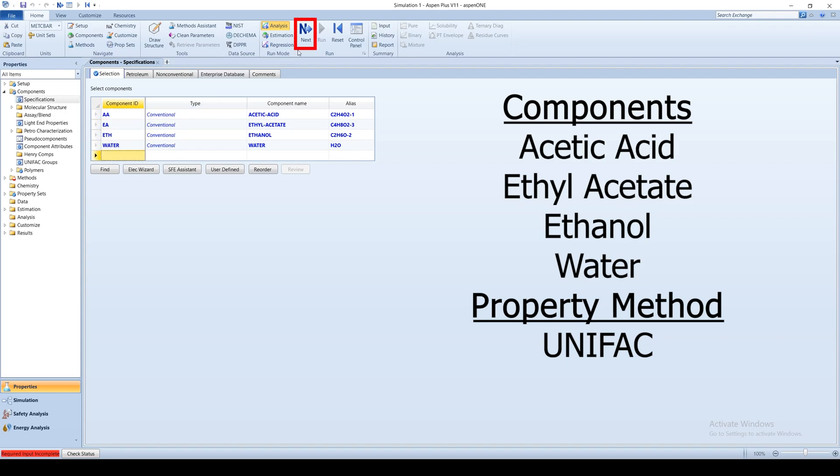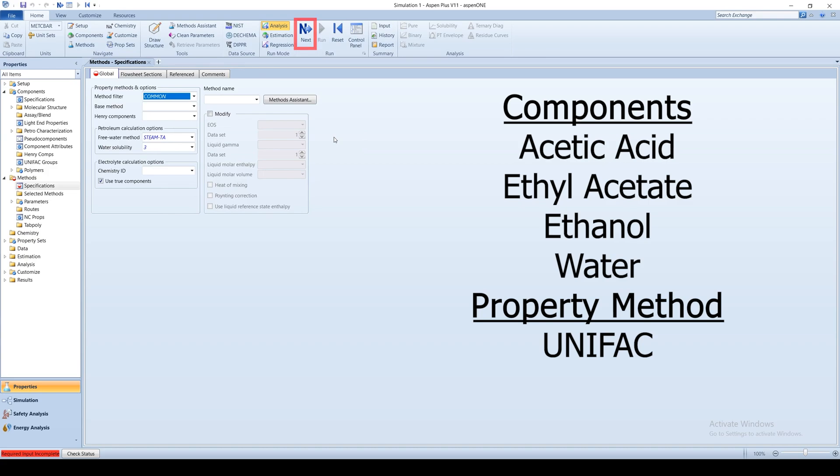Click on the blue next arrow to move on. Choose the UNIFAC method, as we will be working mainly with non-polar hydrocarbon components that do not follow ideal behavior.